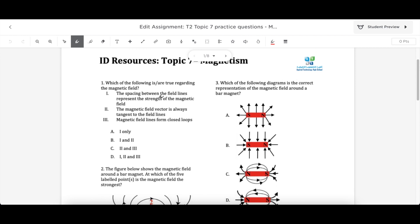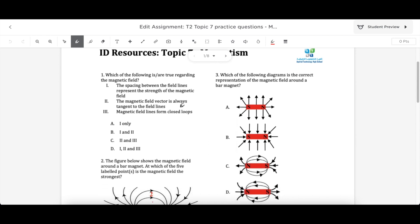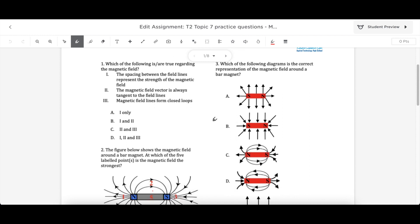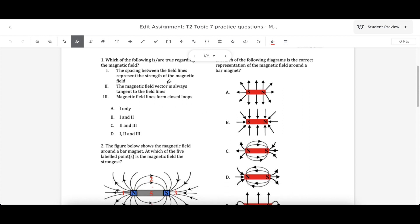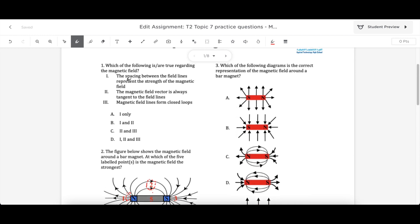So over here, we have a question saying, which of the following is true regarding the magnetic fields? Okay, fine, let's have a look. The spacing between the field lines represent the strength of the field. Okay, the magnetic field vector is tangent to the field lines, whatever that means. Magnetic field lines formed closed loops. So in this case, the spacing does represent the strength. So here's an example right here. You can see that these are close together, so it is very strong. These are far away from each other, so that's pretty weak. So this is correct.